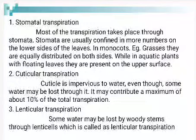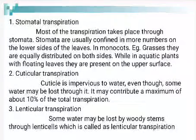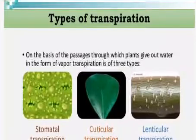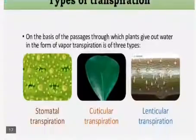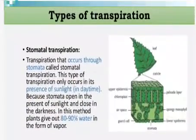The cuticle accounts for up to 10 percent of transpiration. Lenticular transpiration: some water transpires through the bark via small pores called lenticels. The cuticle is present on the upper surface of the leaf, and on the bark some openings are present — water loss through lenticels is known as lenticular transpiration.